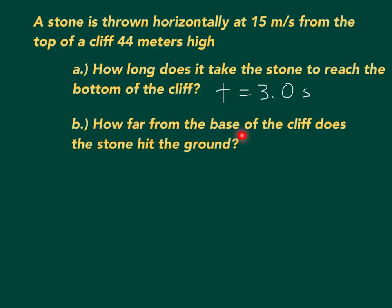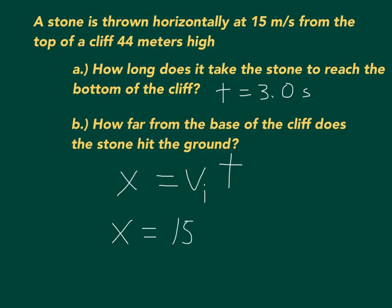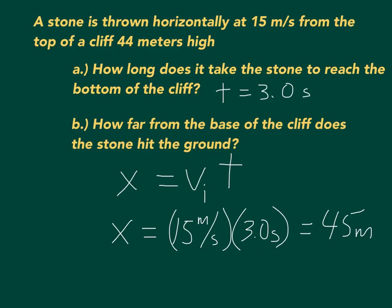Now for Part B: how far from the base of the cliff does the stone hit the ground? That's a horizontal distance, represented by x. We already established that x = v_initial × t. We just found t = 3 seconds, and the initial velocity was given as 15 m/s. So x = 15 m/s × 3 s = 45 meters. The stone lands 45 meters from the base of the cliff.